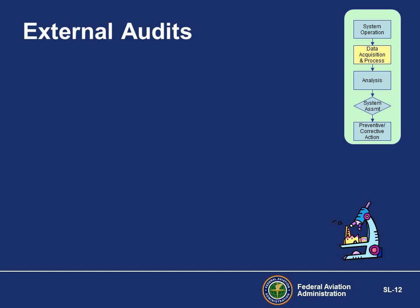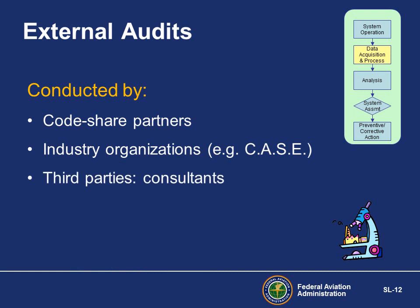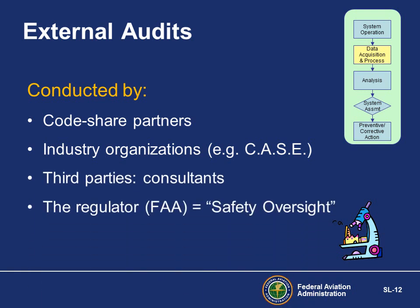Another safety assurance data source is external audits. External audits of the SMS may be conducted by code share partners, customer or industry organizations, other third parties selected by the operator, or the FAA. These audits not only provide a strong interface with the oversight system but also serve as a secondary assurance system. Organizations may elect to have third-party audits from organizations such as IATA, CASE, or ACSF. There are no SMS requirements to hire an external auditor, but if external audit data is available — typically from code shares or the FAA — that data must be used in the analysis of data process.